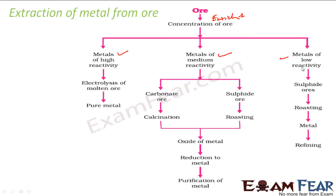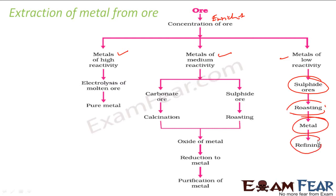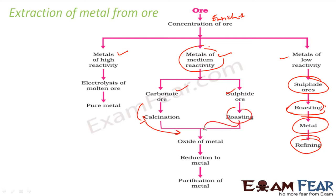In case it is low reactive, you get sulfide ores. Then you roast that metal, you get the metal, and then you refine it. In case of medium reactive substances, you either get carbonate ores or sulfide ores. In that case, you do calcination in case of carbonate ores, to convert that carbonate ore into oxide ores. In case of sulfide ores, you do roasting to convert into oxide ores. So at the end of the day, we want to convert everything into oxide ores.